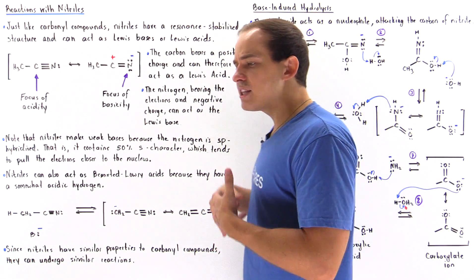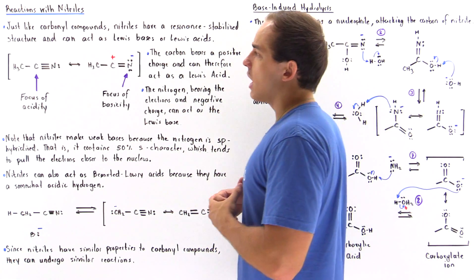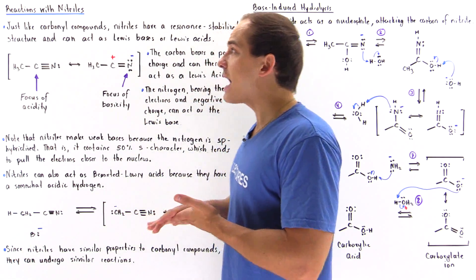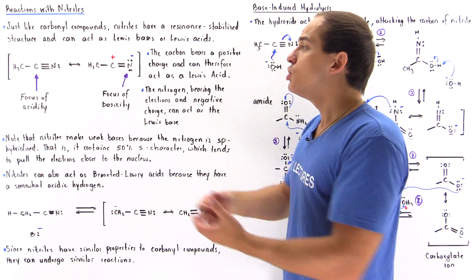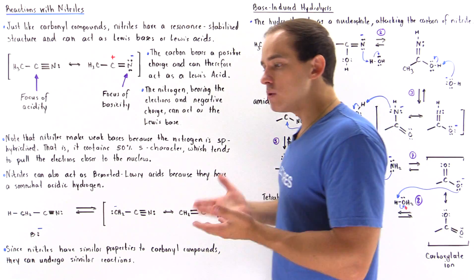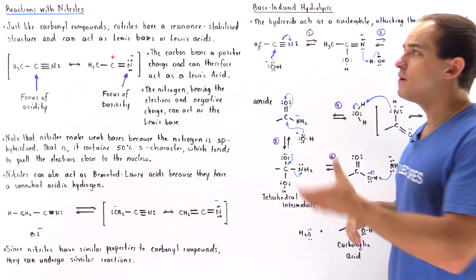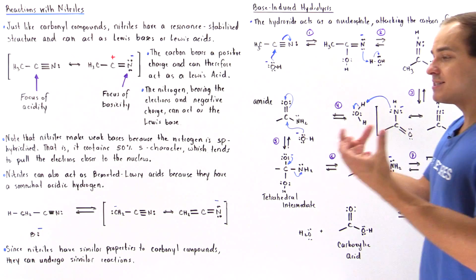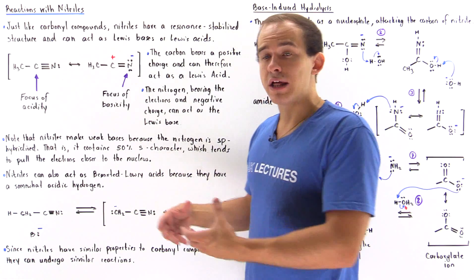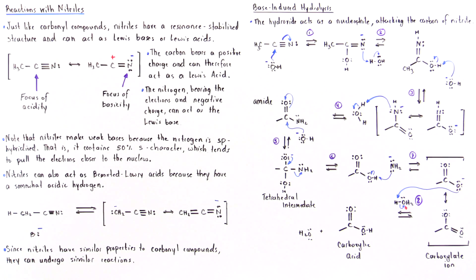The properties of nitrile compounds are very similar to the properties of carbonyl compounds and carboxylic acids, implying that nitriles react in many similar ways. Just as we can take an ester molecule and transform it into a carboxylic acid, we can take our nitrile compound and transform it into a carboxylic acid. The reaction we're going to focus on is the base-induced hydrolysis of nitrile compounds.